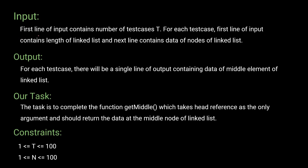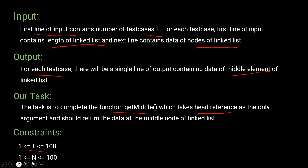For the input format, the first line contains the number of test cases T. For each test case, the first line contains the length of the linked list, and the next line contains the data of the nodes. The output is a single line containing the data of the middle element. We just have to complete the function — input and output are already handled. Constraints: T is between 1 and 100, and nodes are also between 1 and 100.